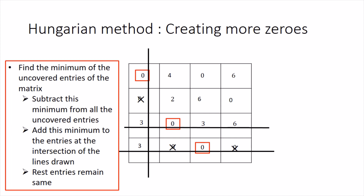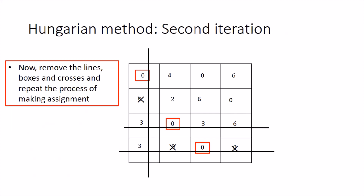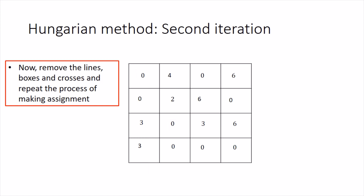Remove all markings — the covering lines, the boxes, and the crosses — to get a clean updated reduced matrix. Repeat the assignment process from the beginning. The first row has two zeros, so skip. The second row has two zeros, so skip. The third row has exactly one zero, so assign there — draw a box in the second column — crossing out the zero in that column.